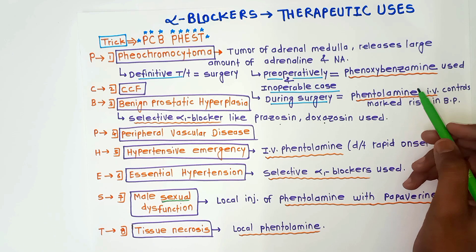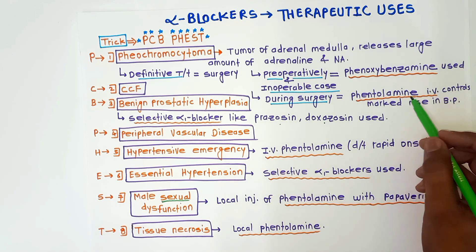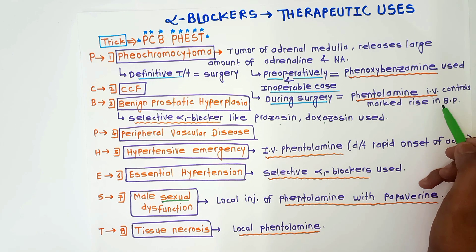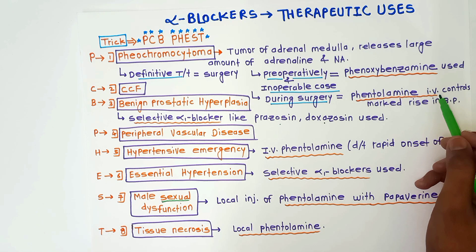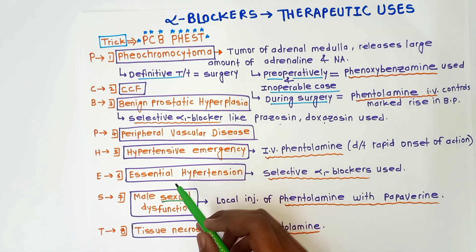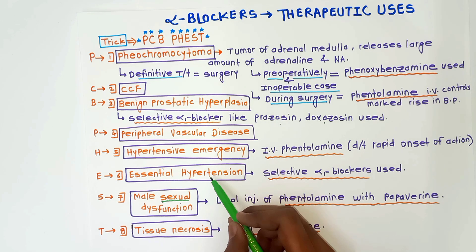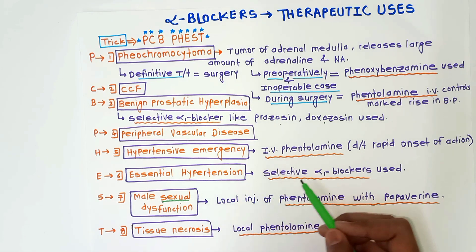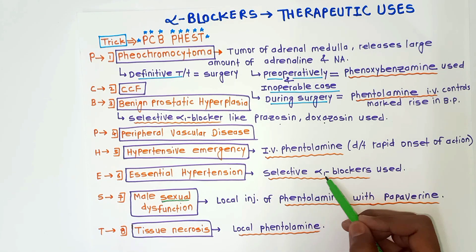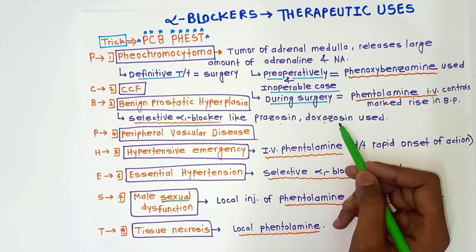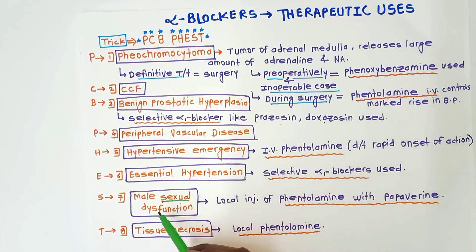Also, during pheochromocytoma surgery, if there is a sudden rise in blood pressure with complications, intravenous phentolamine is used to control the marked rise in BP. E for essential hypertension — in this case, selective alpha-1 blockers like prazosin and doxazosin are used.